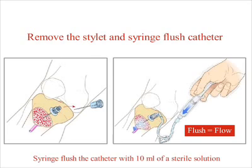Now let's take a few brief moments to ensure that the EZIO is in the correct position. There are four specific things you can do to confirm correct catheter placement. First, the catheter is firmly seated and does not move. Second, you note blood at the catheter hub. Third, you're able to aspirate blood or marrow. Fourth, drugs or fluids flow without difficulty and there are no signs of extravasation or leakage.